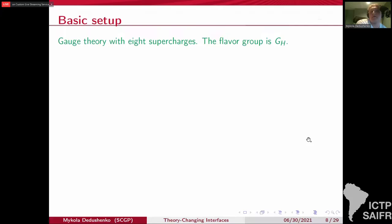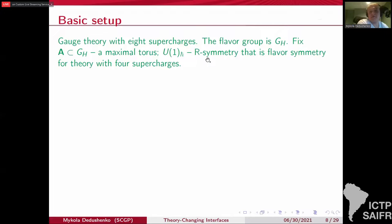So the basic setup is gauge theory with eight supercharges. Some gauge group and flavor group G_H. Let's fix the maximal torus of G_H. And then U(1)_H-bar is this special R symmetry of the theory with eight supercharges that from the point of view of theory with four supercharges looks like a flavor symmetry. So backgrounds for U(1)_H-bar break half of SUSY.